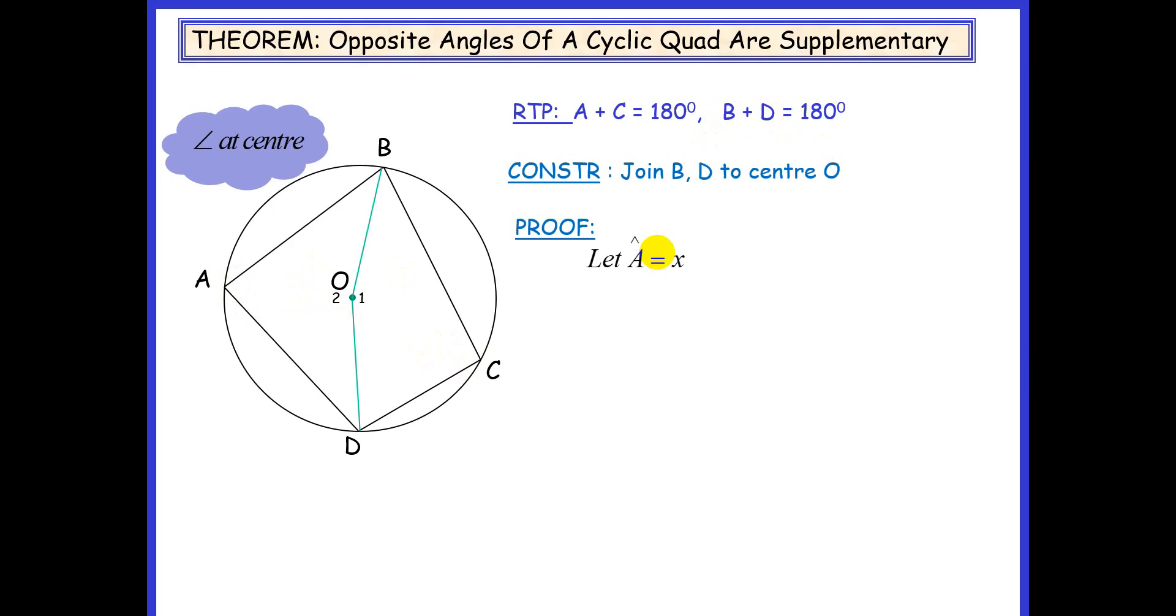Now we're going to let angle A be x, and if angle A is x, we can conclude that O1 is 2x. The reason is angle at the center is twice the angle at the circumference.